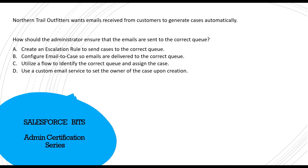The options are: A) Create an escalation rule to send cases to the correct queue. B) Configure email-to-case so emails are delivered to the correct queue. C) Utilize a flow to identify the correct queue and assign the case. D) Use a custom email service to set the owner of the case upon creation.